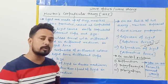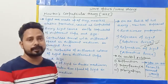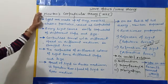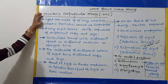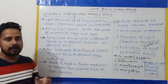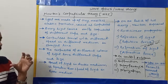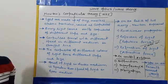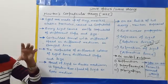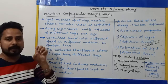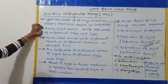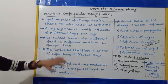Newton's Corpuscular Theory was given by Newton in 1675. According to this theory, light is made up of tiny, massless, elastic particles called corpuscles. Every light source emits corpuscles of different shapes and sizes.